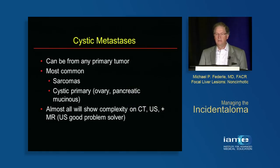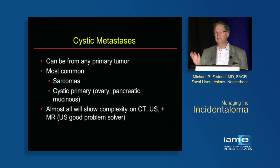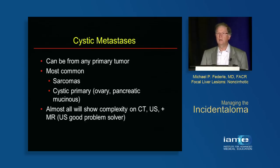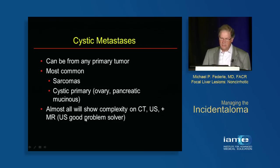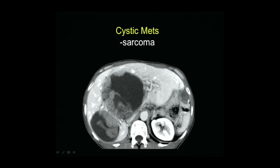Let's talk about cystic metastases. They can occur from any primary tumor, but two to think about in particular: either the primary tumor is cystic like an ovarian cystadenocarcinoma, or the family of sarcomas — particularly GI stromal tumors. Metastases from those entities account for the great majority of cystic metastases. Almost all will show complexity on CT, ultrasound, and MR. On T1 and T2 here there's fluid in a large cystic space, but there is enhancing mural nodularity, a very thick wall, and settling of debris — proven metastasis from a primary sarcoma.